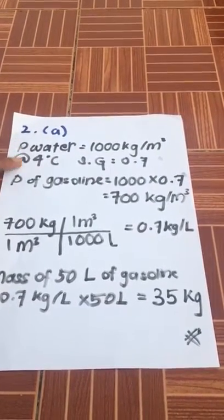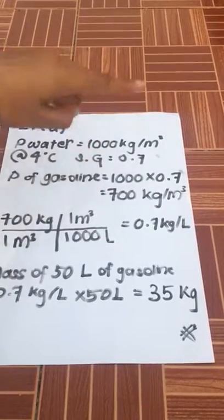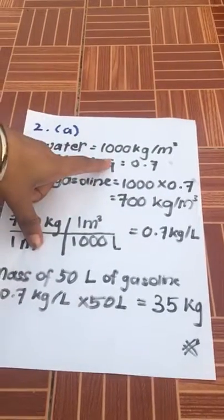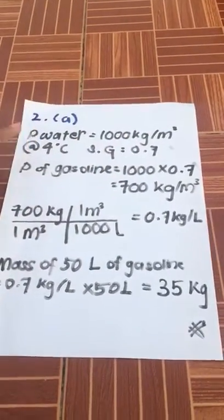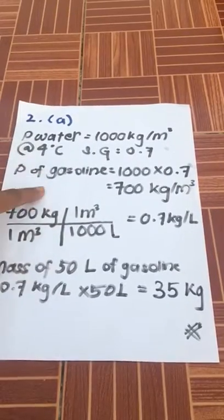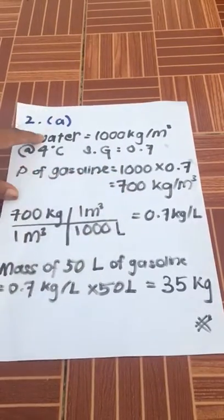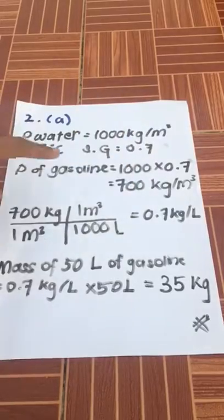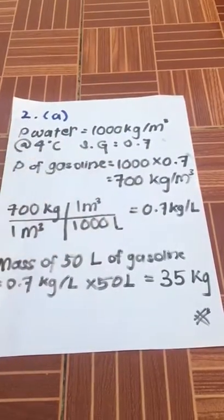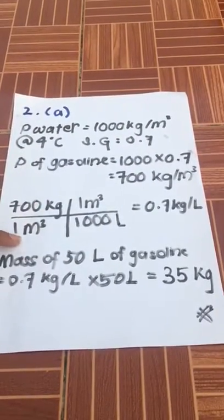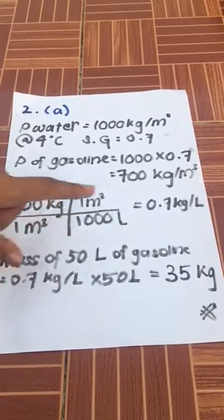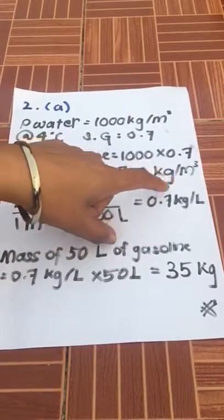So density of water at 4 degrees Celsius will be 1000 kg per meter cubic. At specific gravity of 0.7, the density of gasoline is 1000 times 0.7, which gives us 700 kg per meter cubic. So 700 kg per meter cubic divided by 1000 liters equals 0.7 kg per liter.